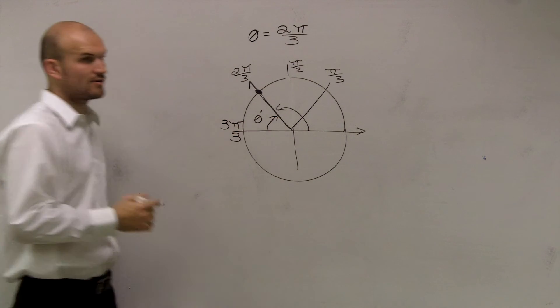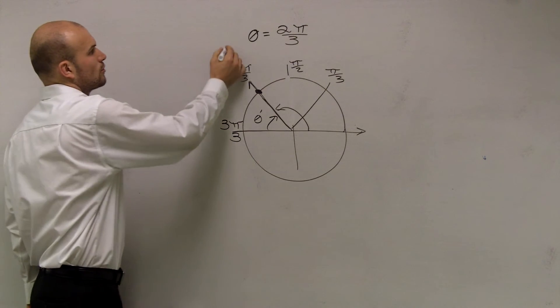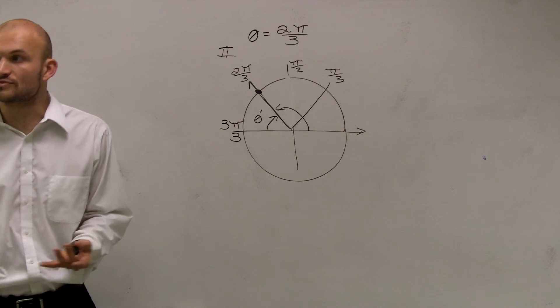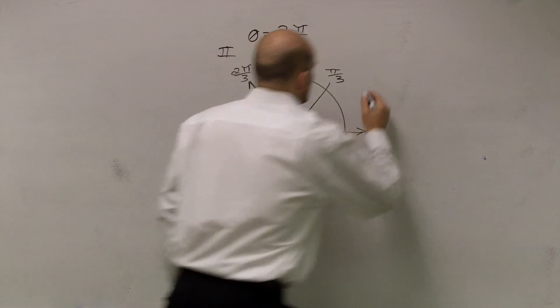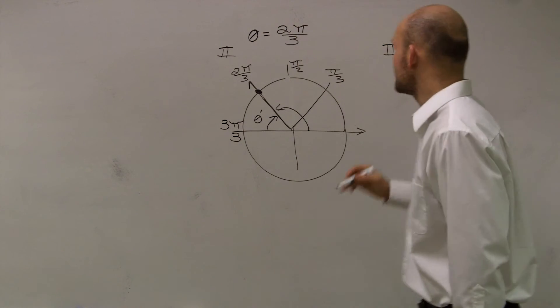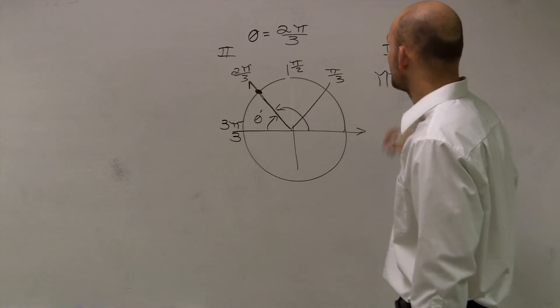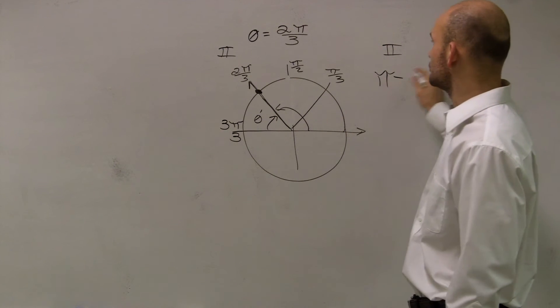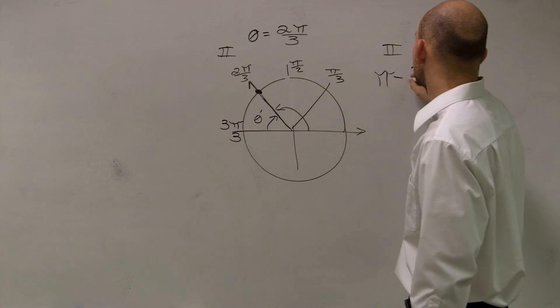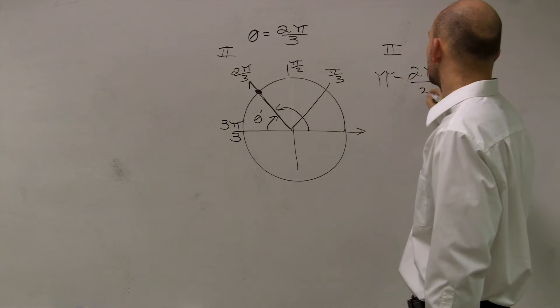Reference angle is what we call theta right there. So this is in quadrant 2. If you remember your notes from last class period, I gave you a formula. When you have quadrant 2, your reference angle, you're going to take 180, or π, and subtract your angle.